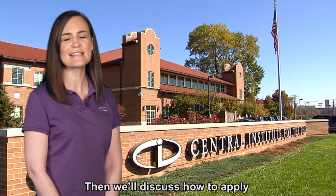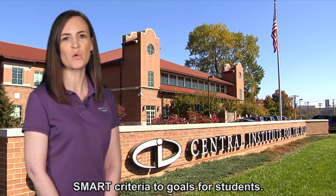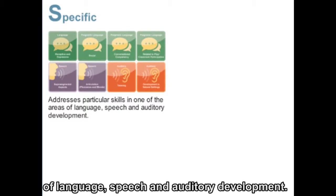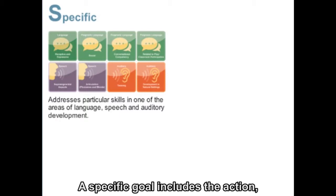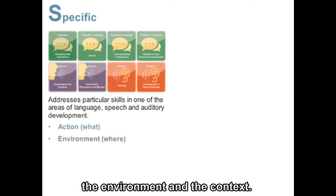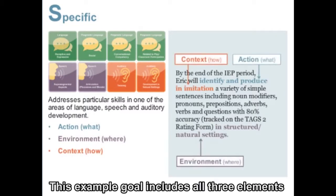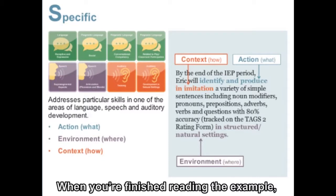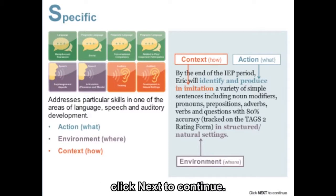Then, we'll discuss how to apply the SMART criteria to goals for students. A specific IEP goal for a student with hearing loss addresses particular skills in one of the areas of language, speech, and auditory development. A specific goal includes the action, the environment, and the context. This example goal includes all three elements that make a goal specific. When you're finished reading the example, click Next to continue.